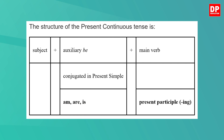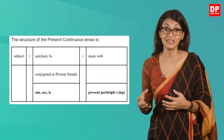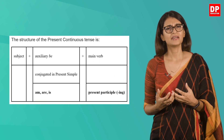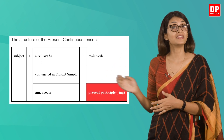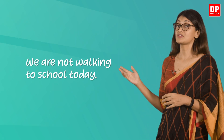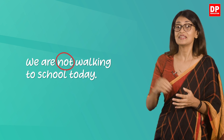Let's look at the structure more closely: subject plus auxiliary 'be' conjugated in the present simple — 'am', 'are', or 'is' — plus the main verb in the present participle form, ending with '-ing'. The auxiliary verb 'be' is conjugated in the present simple, and the main verb is invariably in the present participle form ending with '-ing'. For negative sentences, we insert 'not' between the auxiliary verb and the main verb.